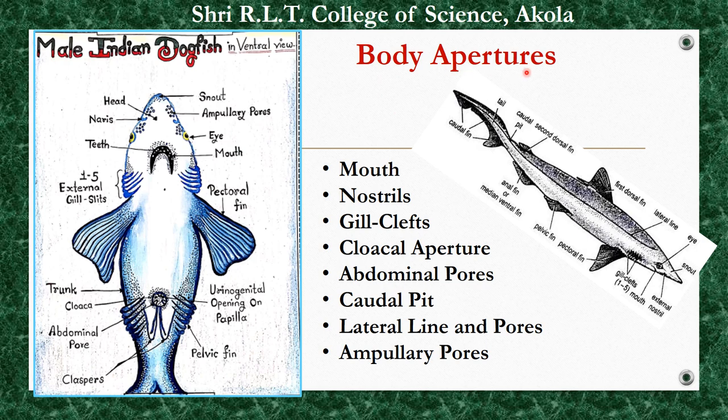There are about eight different types of important apertures present on the body surface of Scoliodon. The first is the mouth, which is a transverse, somewhat crescentic opening lying ventrally on the head near its anterior end. The mouth is bounded by upper and lower jaws, each bearing one or two rows of sharply pointed, backwardly directed teeth, adapted for holding and tearing prey but not for chewing.